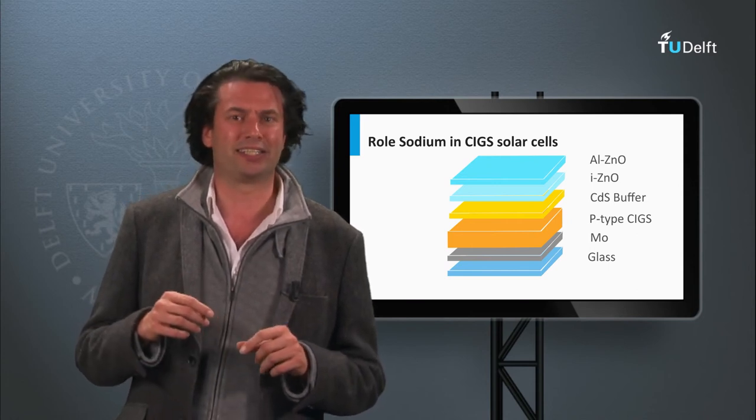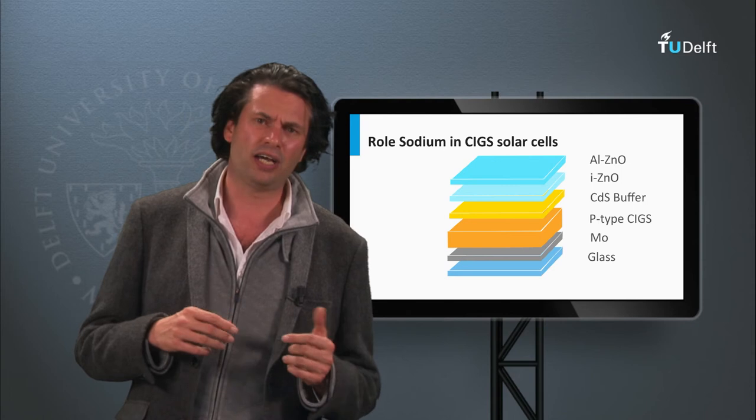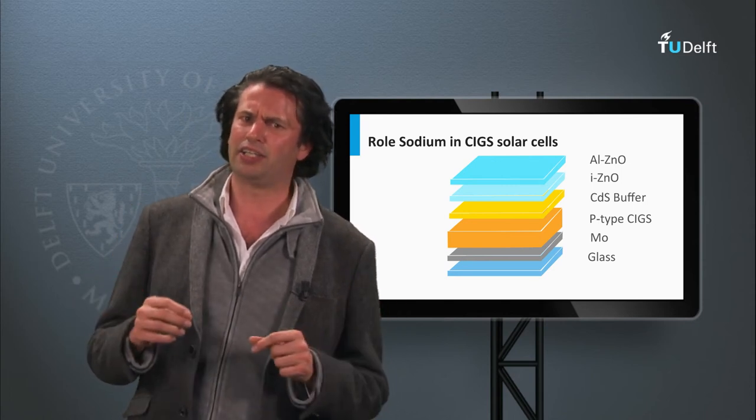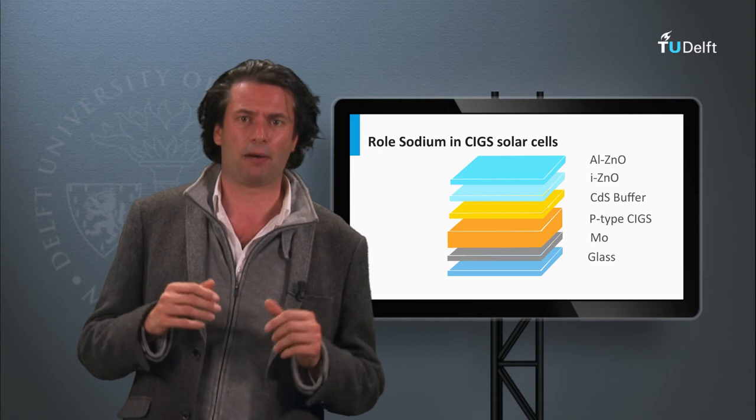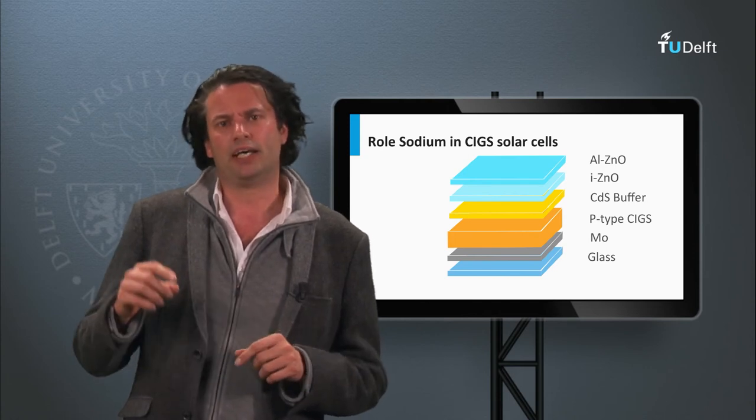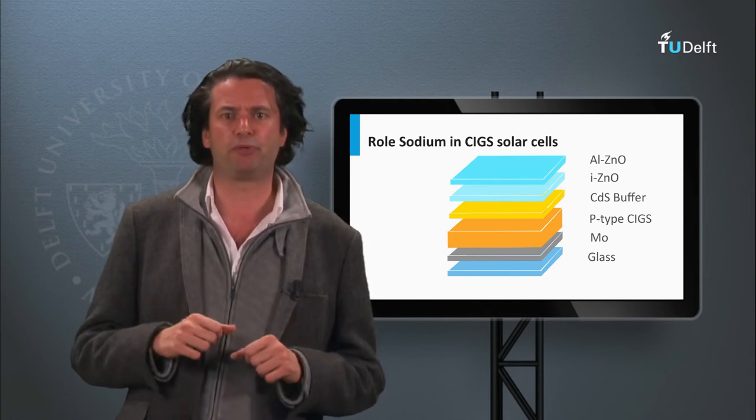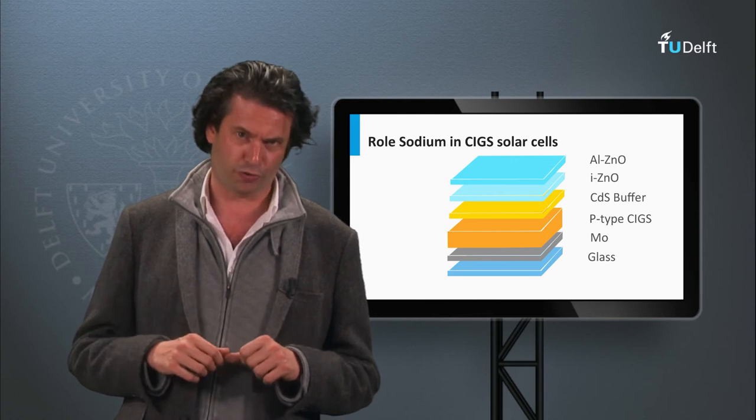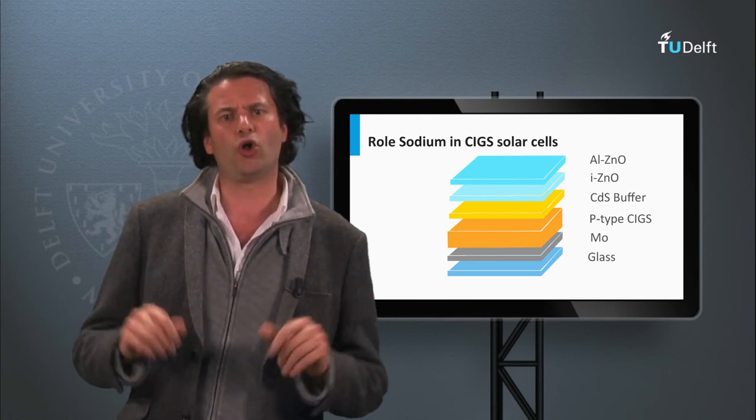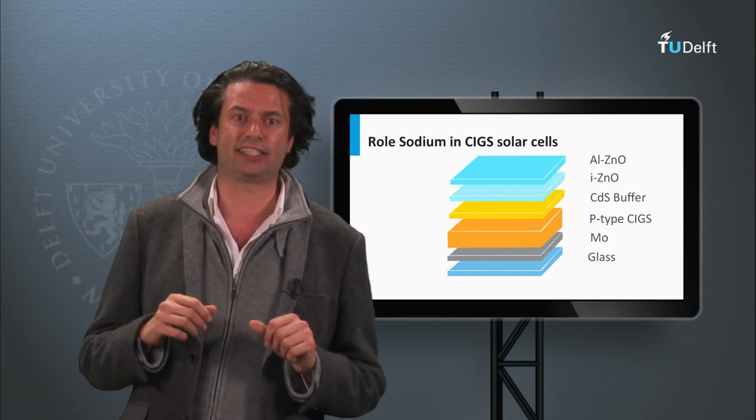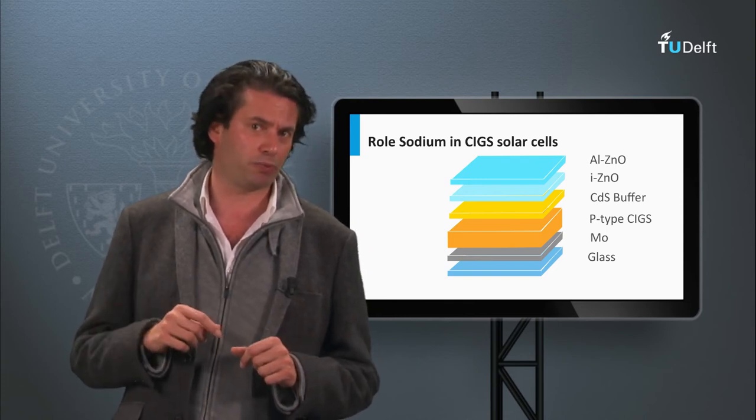Similar to multi-crystalline silicon as discussed last week, the larger the grain size, the less grain boundaries and less recombination are present in the material. This results in higher bandgap utilization and higher open-circuit voltages. Typical optimum concentration of sodium in the CIGS layers is 0.1%.